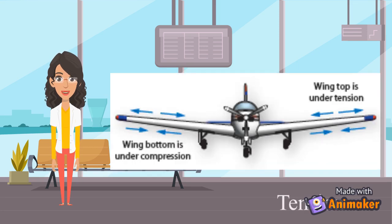Tension is the force that tries to pull an object apart. Gravity acting on a wing pulls the wing down, thus creating tension in the top wing skin.